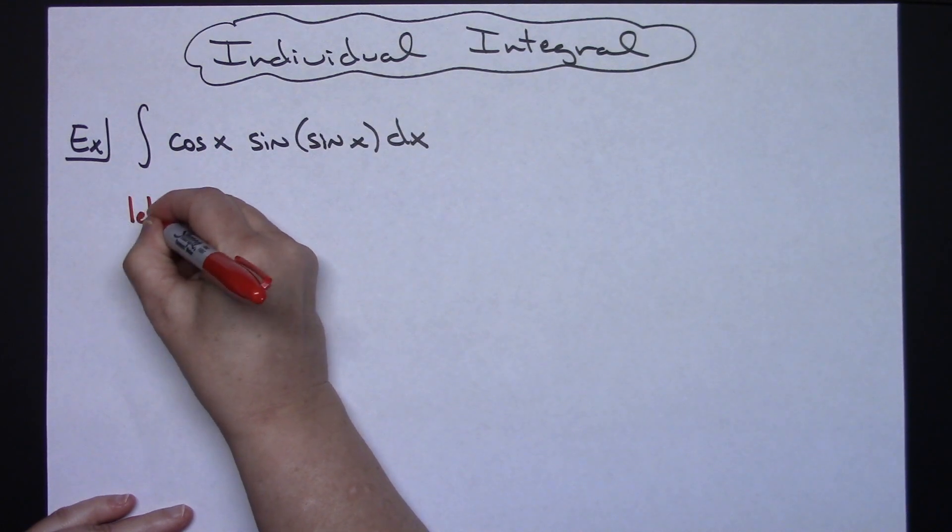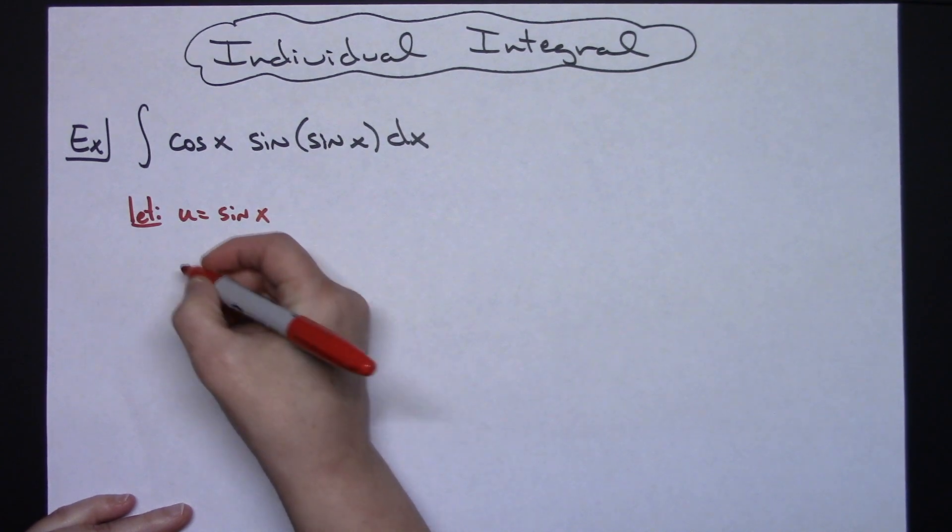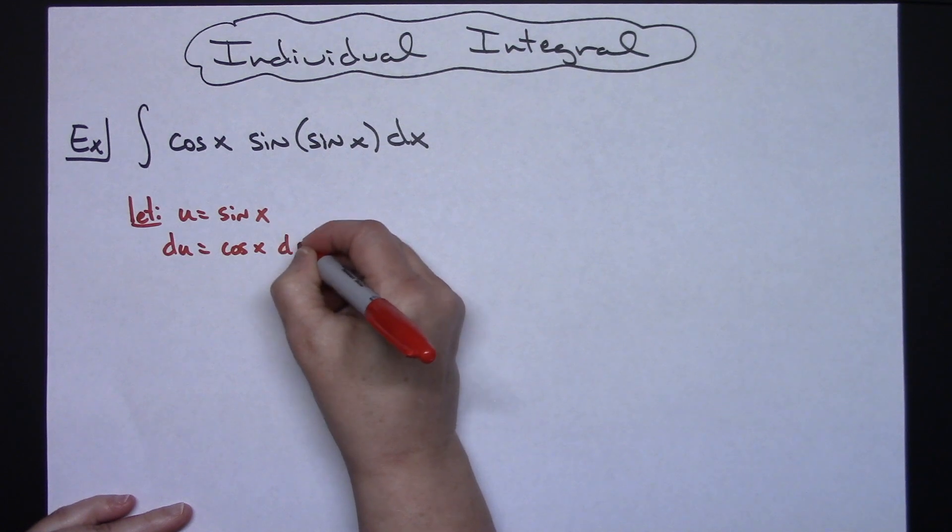So we're going to start by letting u equal sine x. We'll take the derivative of both sides, so we'll have du is equal to cosine x dx.